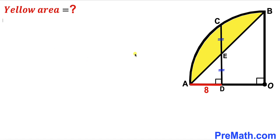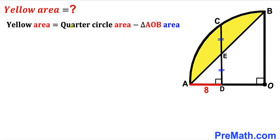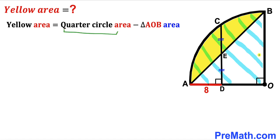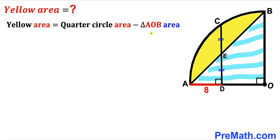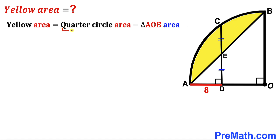Let's get started. Our very first observation is that the yellow shaded region area is going to be equal to the area of the whole quarter circle minus the area of right triangle AOB. So our task is to calculate the area of the quarter circle and the area of triangle AOB.